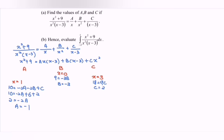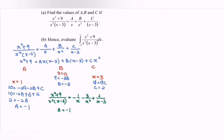Kindly rewrite the final answer. We have x squared plus 9 over x squared multiplied with x minus 3. This equals negative 1 over x, negative 3 over x squared, plus 2 over x minus 3. So the value of a is negative 1, b is negative 3, and c is 2.